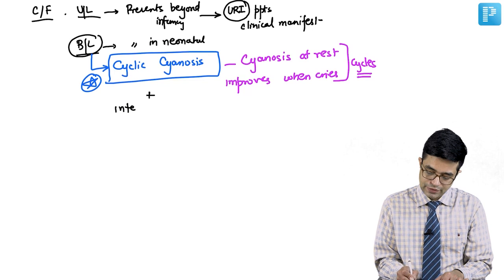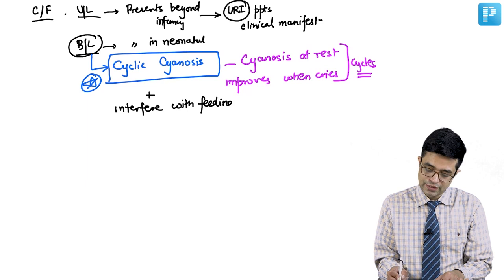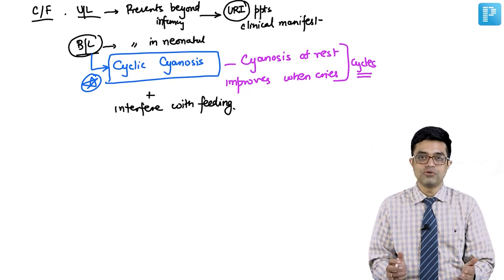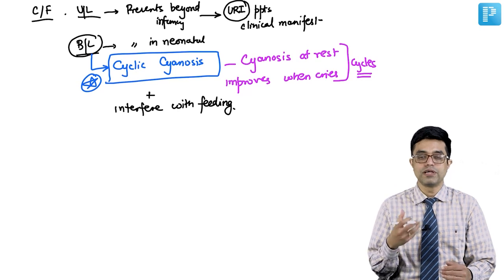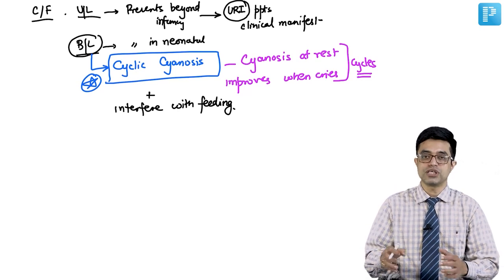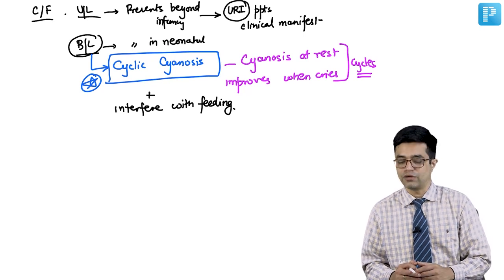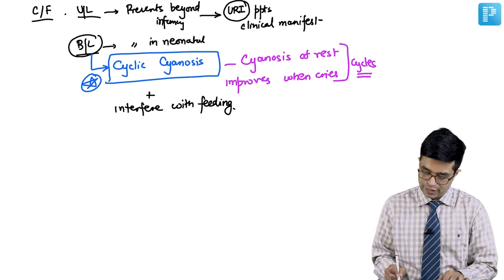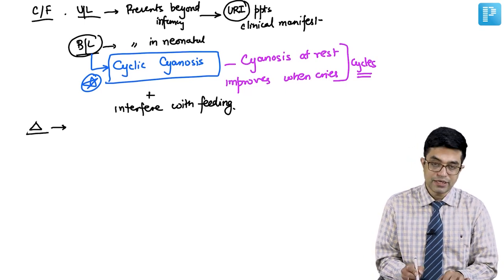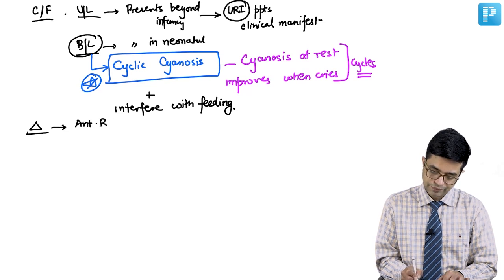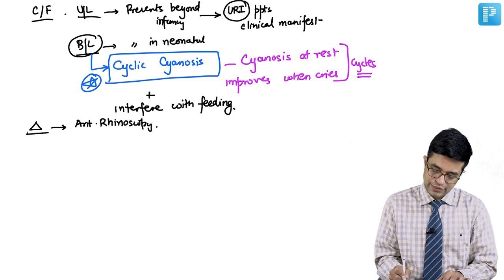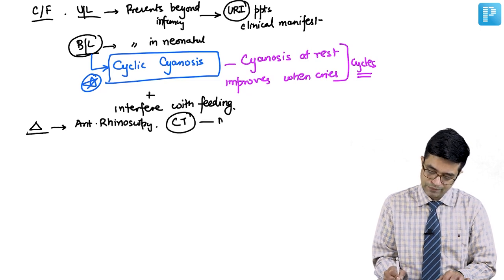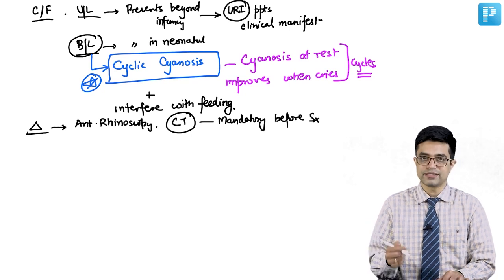Bilateral choanal atresia also interferes with feeding. During sucking movements, obstruction and absence of airflow worsen cyanosis during feeding, disrupting the child's feeding pattern. It is considered a medical emergency if diagnosed in the neonatal period. Diagnosis can be made by anterior rhinoscopy, but CT scan is mandatory before performing surgery.